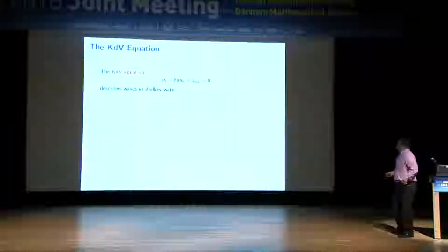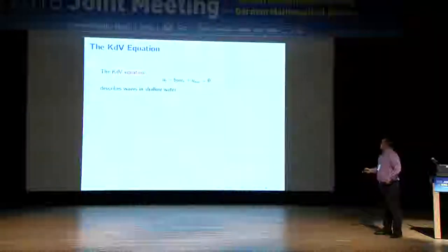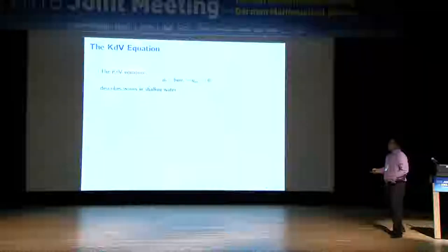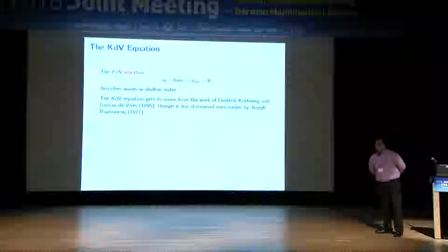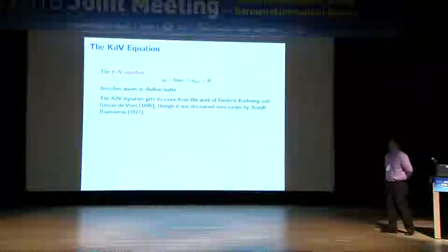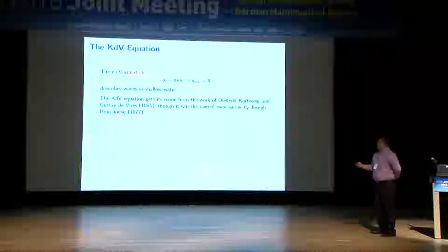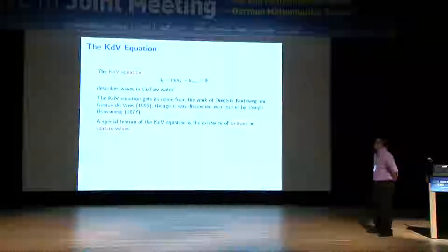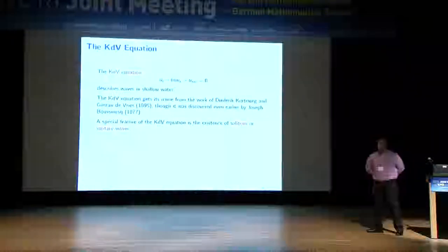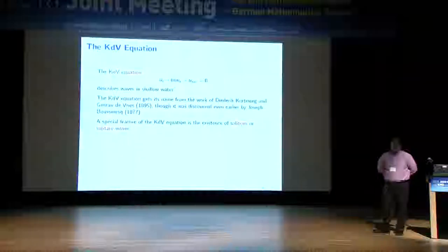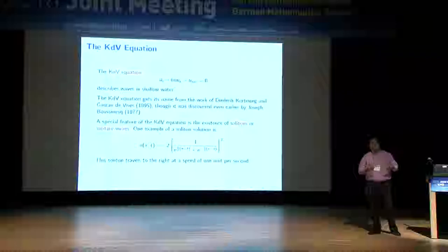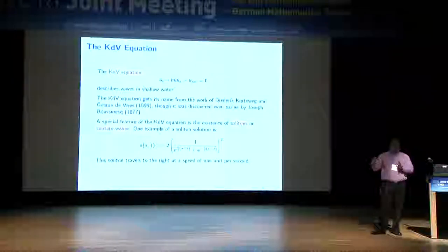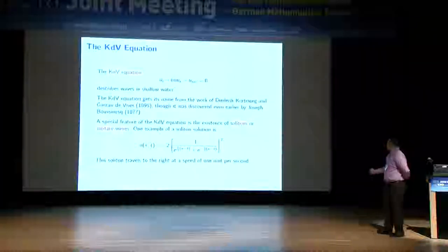Let me show you the KDV equation. It describes waves in shallow water, and it's named after Korteweg and De Vries, even though Boussinesq actually considered the equation earlier. One reason why the KDV equation is quite well known is because it admits solitons — solutions that do not change their shape but rather travel at constant speed.